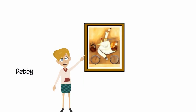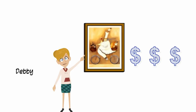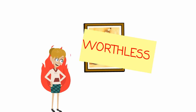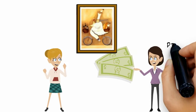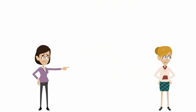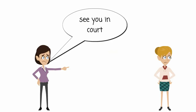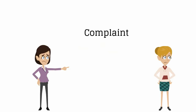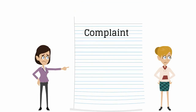By way of example, here we have Debbie, and Debbie claims that she's selling an original masterpiece. In fact, the painting is only a copy and is worthless. But Patty trusts Debbie and pays a lot of money for the painting, believing that it's an actual masterpiece. When Patty realizes that Debbie fooled her, Patty decides to sue Debbie for fraud.